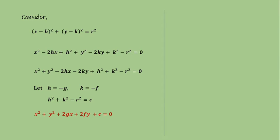Now, if a circle's equation is given in this general form, how can we find its center or its radius? This equation is obtained from the center-radius form in which the center is h comma k. Since h and k were replaced by minus g and minus f, the center here is minus g comma minus f. This is the center for the general equation of the circle.